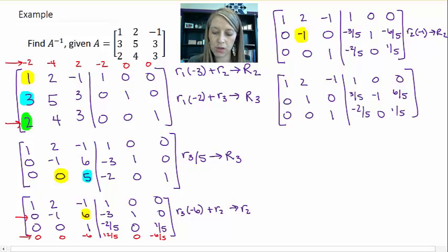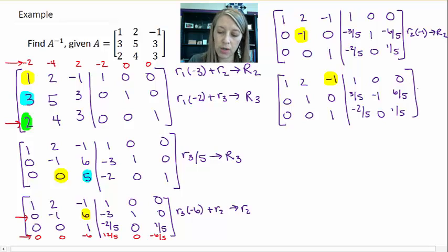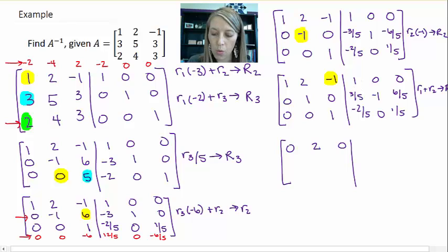All right, two more steps to get zeros where these two places are. It doesn't matter which one first. So I'm going to do this one. It's a little easier. All I need to do is add my row 1 plus my row 2. And that becomes my row 2. So 1 plus 0 is 0. 2 plus 0 is 2. Negative 1 plus 1 gives me 0. 1 minus 2 fifths gives me a 3 fifths. 0 plus 0 is 0. And 0 plus 1 fifth is a 1 fifth.